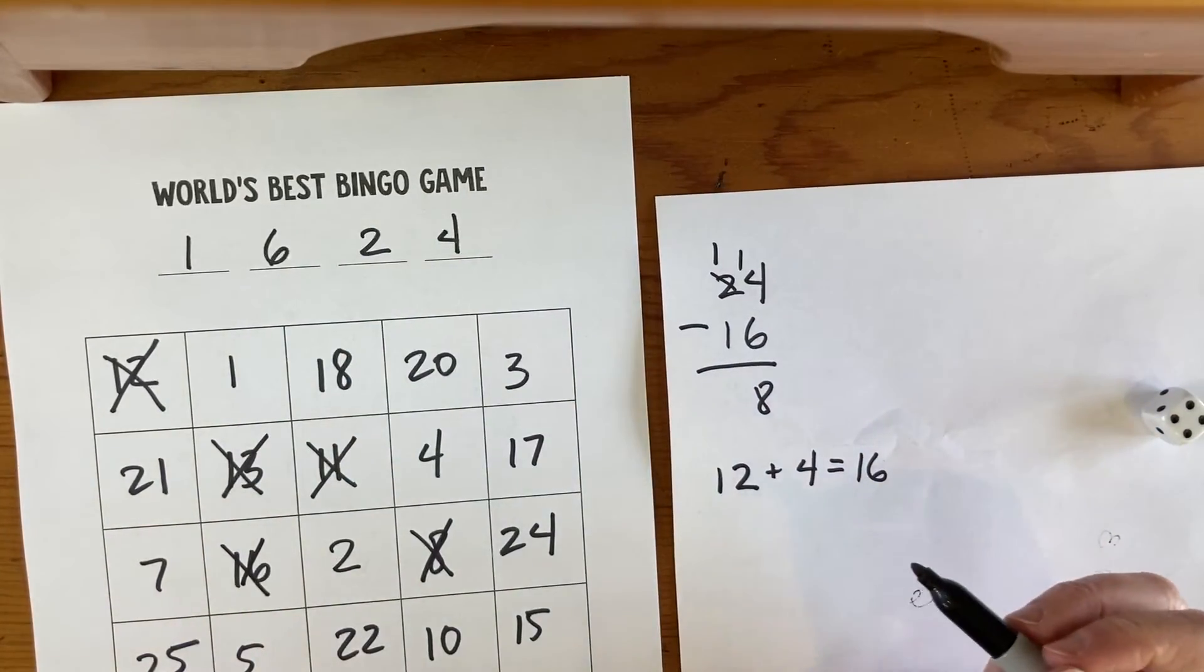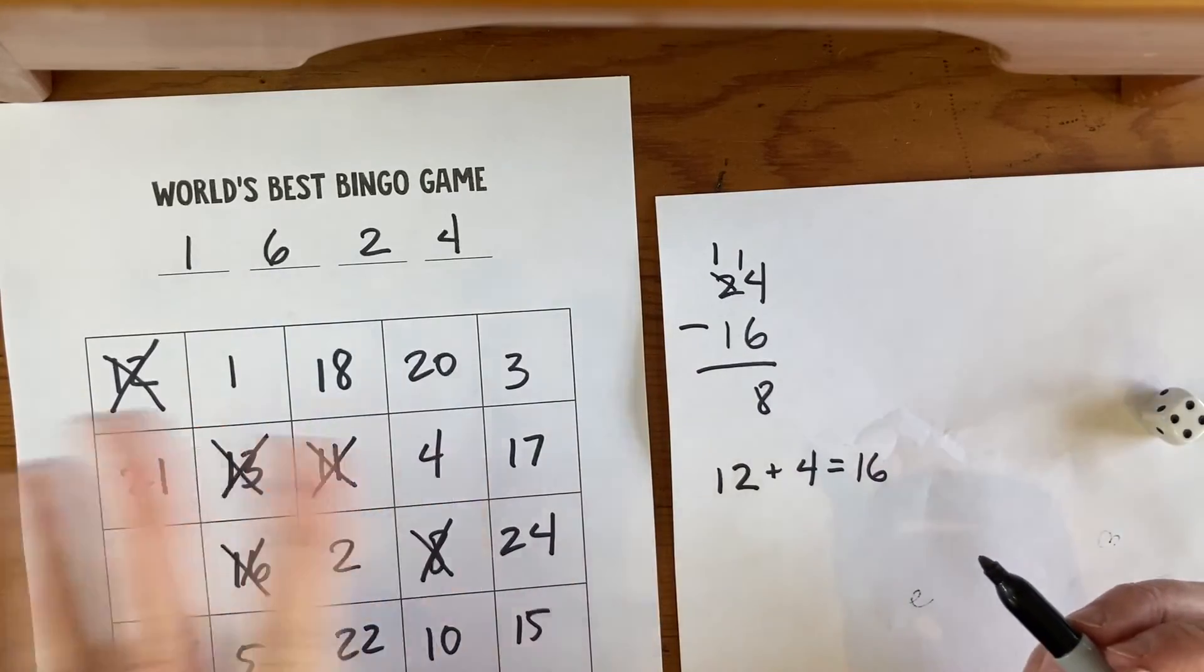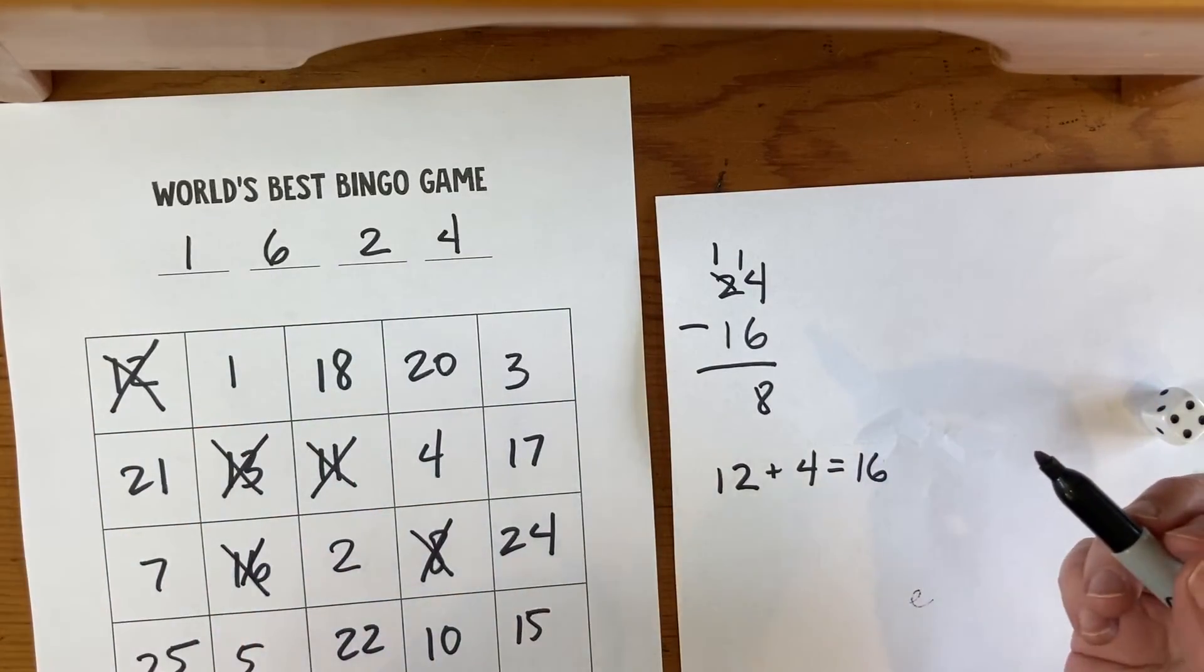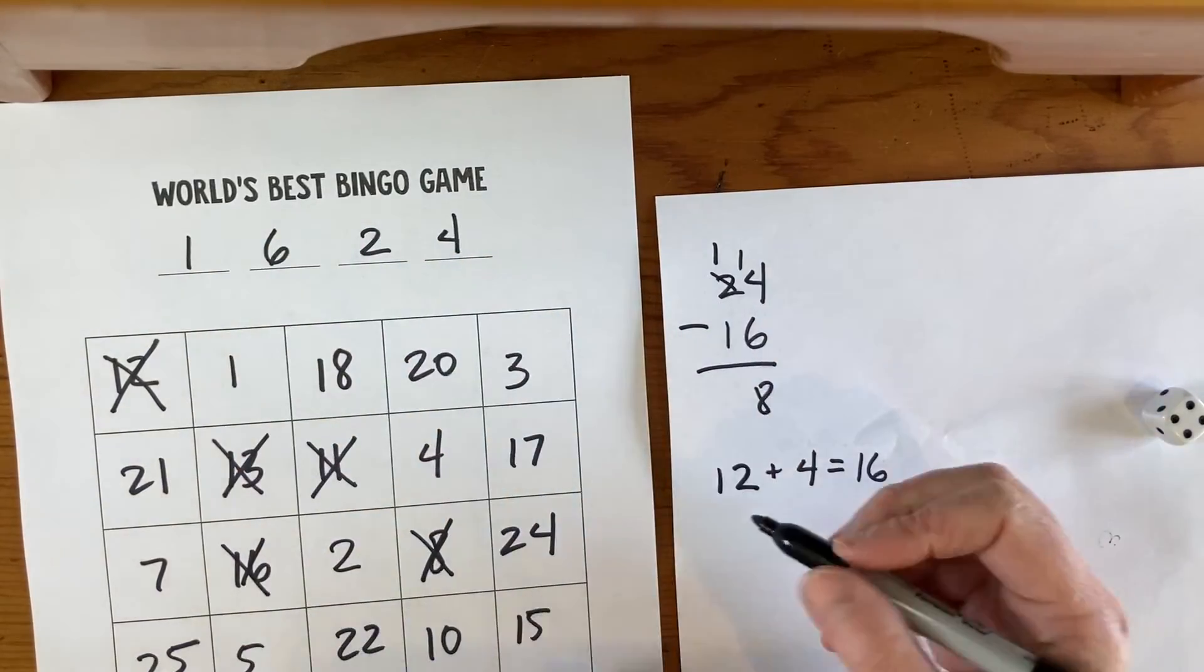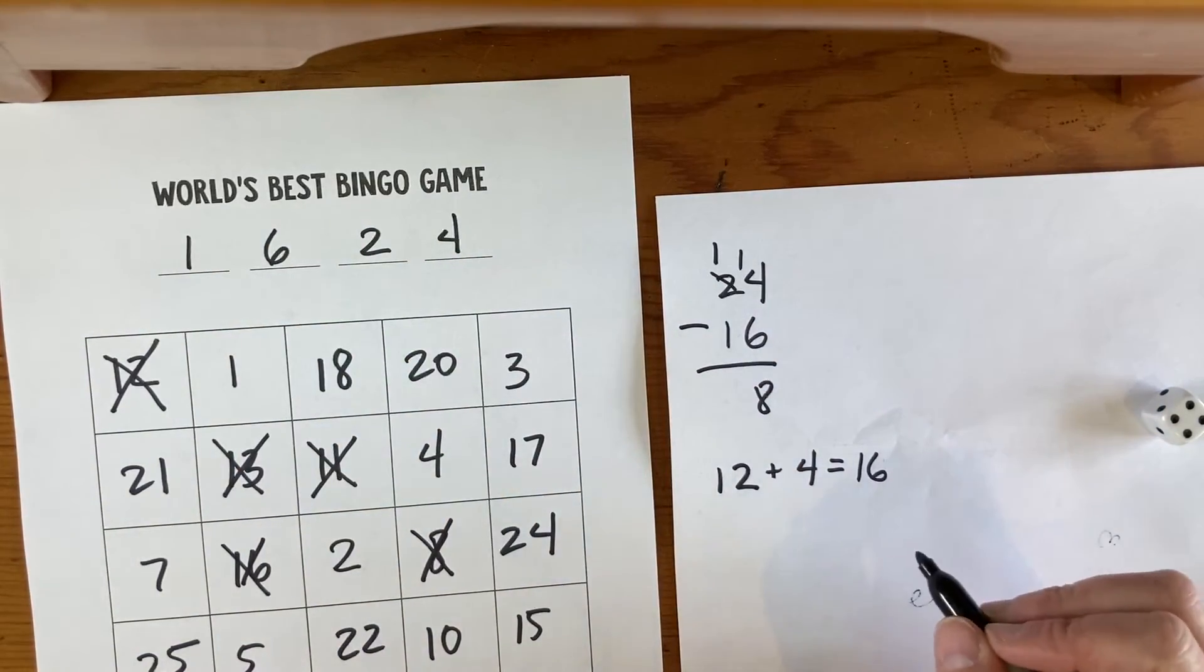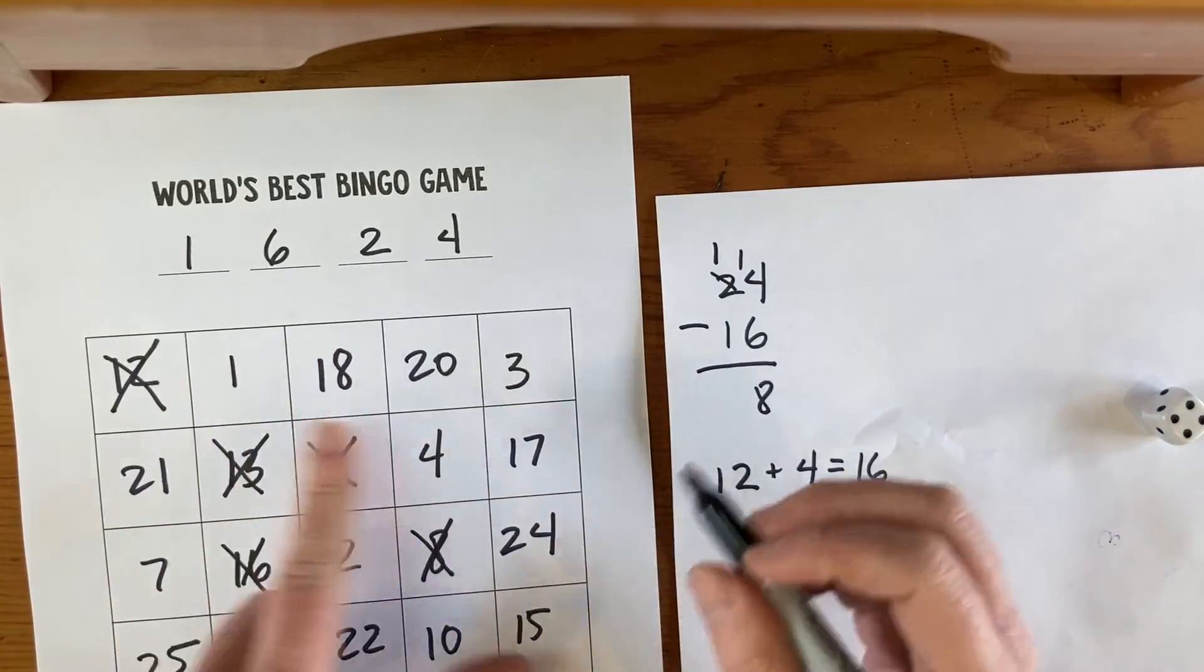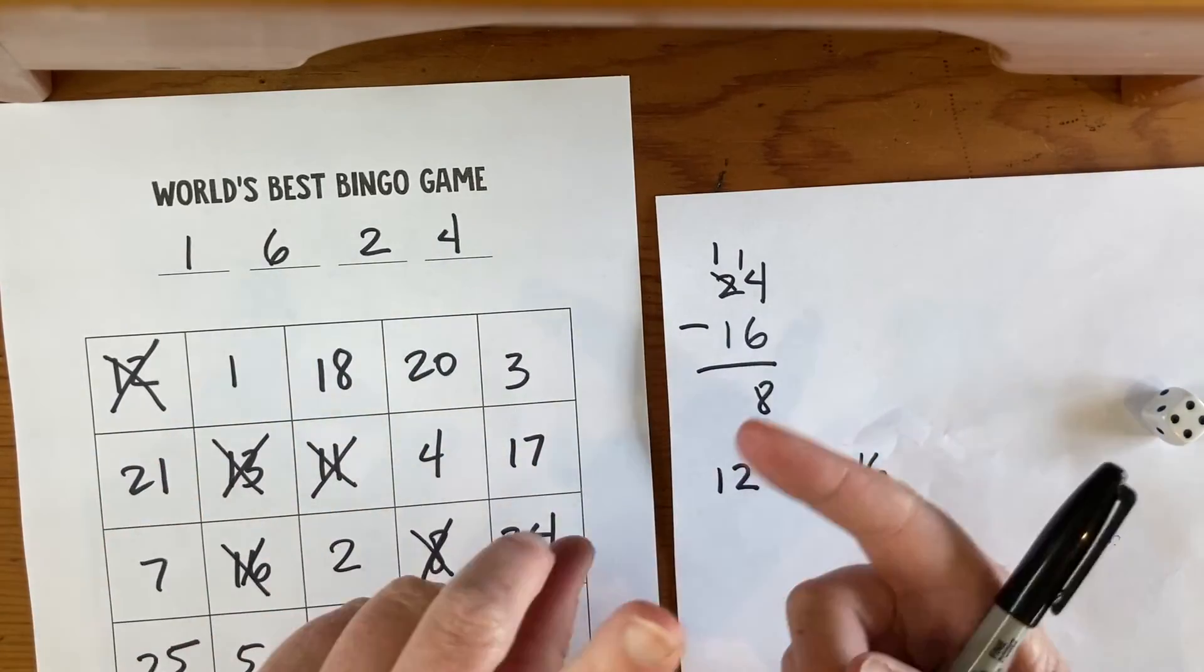If you have lots of people playing, they might say, 'Oh, I got 18,' and so then the others just need to ask, 'How did you get 18?' and then they will explain how they did it. It's helpful to write it down so that you don't forget. Once they've proven it, then they can cross off their number.